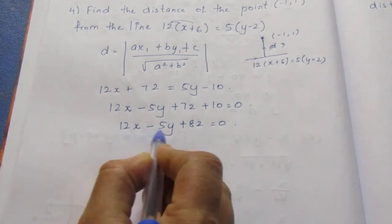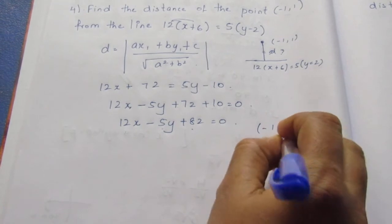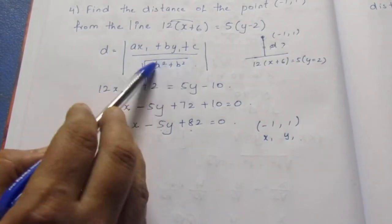So this will be your A, B, C and (-1, 1) will be your x₁, y₁. Now we need to substitute the values of x₁, y₁ as well as the A, B, C.